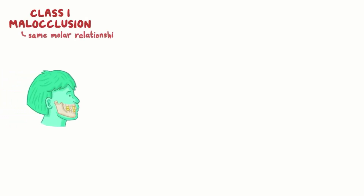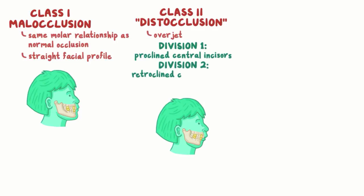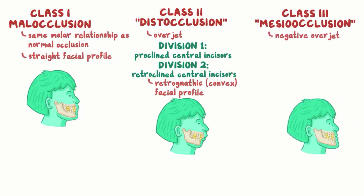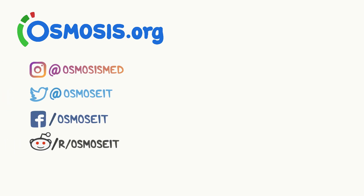As a quick recap: class I malocclusion has essentially the same molar relationship as normal occlusion and results in a straight facial profile. Class II or distocclusion results in an overjet and has two divisions — division I has proclined central incisors and division II has retroclined central incisors — resulting in a retrognathic or convex facial profile. Lastly, class III or mesioocclusion results in a negative overjet and has two divisions, with a skeletal class determined by genetics and a pseudoclass caused by an anterior shift in the mandible, resulting in a prognathic or concave facial profile. For more information, visit www.osmosis.org, where we have flashcards, questions, and other awesome tools to help you learn medicine.